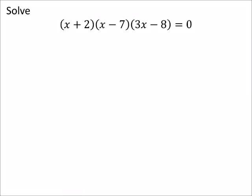This one is going to work exactly like the ones we just did, but now you're going to have three answers because we have three polynomials being multiplied together, which equals zero. But only one of them actually has to equal zero.